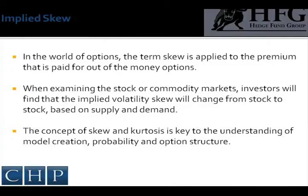An example of a position that would create skew risk is a put spread. Assume that the current term structure of volatility on an S&P 500 ETF (SPY) is 15% at-the-money and 18% for a 10% out-of-the-money put. When a put option buyer purchases an at-the-money put and sells an out-of-the-money put, they are generally looking for the market to move lower. If the implied volatility is higher on the out-of-the-money put, they will benefit if the skew contracts — meaning the skew moves closer together. If the implied volatility spread moved to 2% from 3%, the investor would earn money with all factors remaining unchanged.